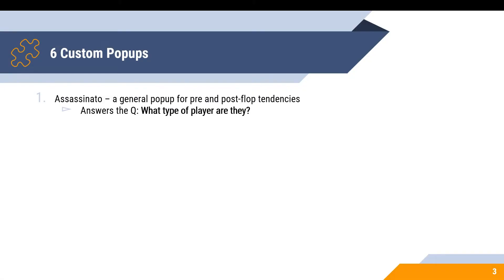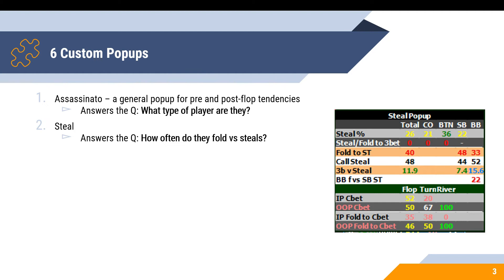The Smart HUD comes with six custom pop-ups as well. The first is the Assassinato pop-up — a general pop-up for pre and post-flop tendencies that helps answer the question: what type of player are they? The second pop-up is the steal pop-up, which tells us how often they fold versus steals, how often they steal in general, and some post-flop stats as well.